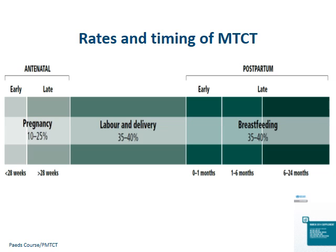So why do we have a whole module dedicated to labour and delivery and preventing transmission during this time? This slide reminds us of the risk of transmitting HIV to the baby. About 10 to 25% of transmissions happen during pregnancy, but 35 to 40% of children who will be HIV positive will acquire HIV during labour and delivery, and another 35 to 40% during breastfeeding.